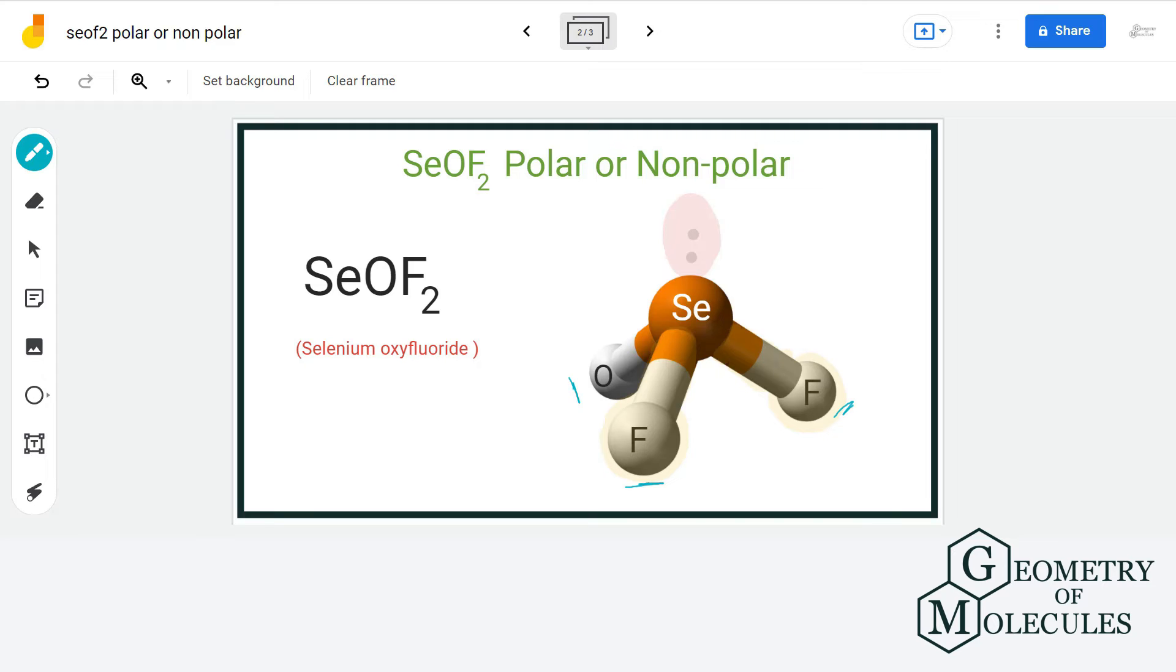And as the electronegativity of fluorine and oxygen is more, it will tend to pull the electron cloud towards itself more than selenium and here there will be a dipole moment, the vector of which will be towards fluorine atom in selenium-fluorine bond and towards oxygen atom in selenium-oxygen bond.